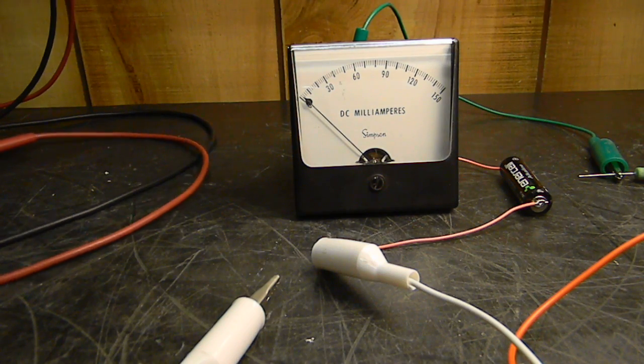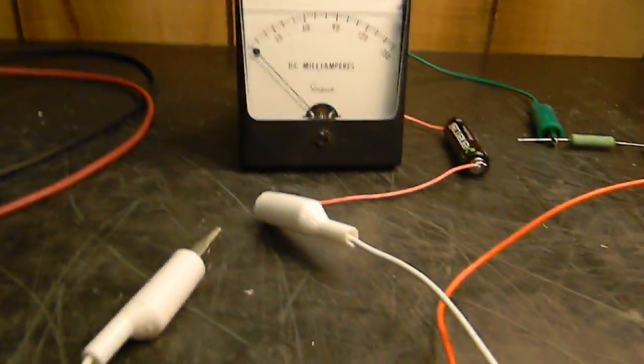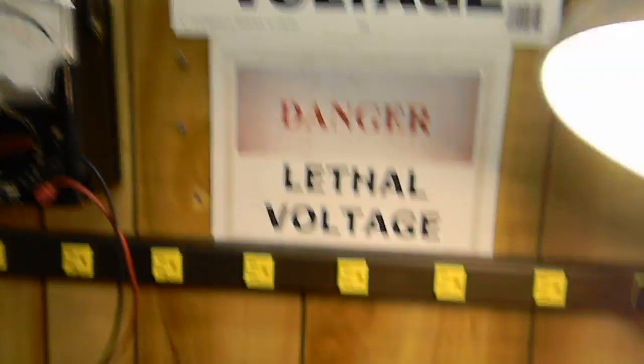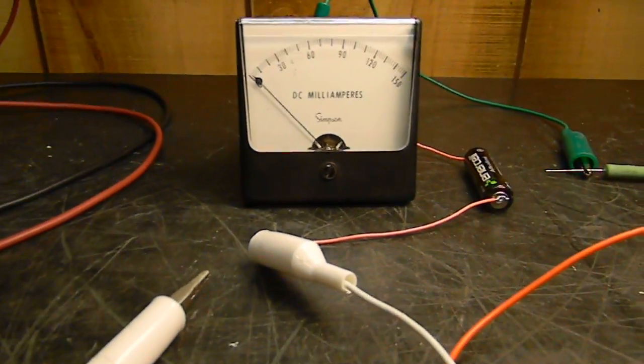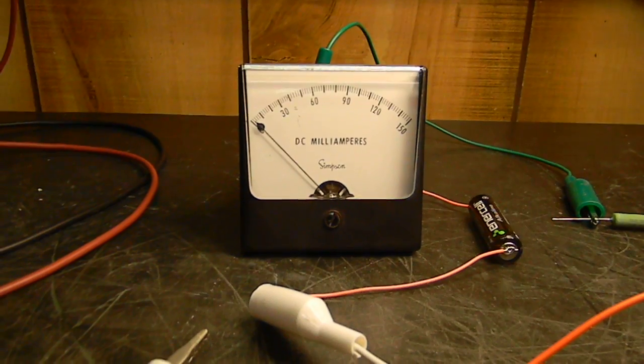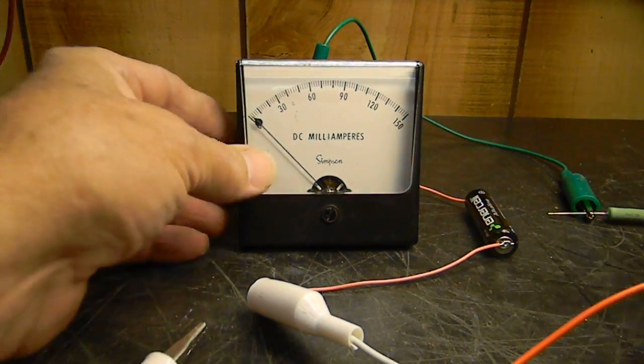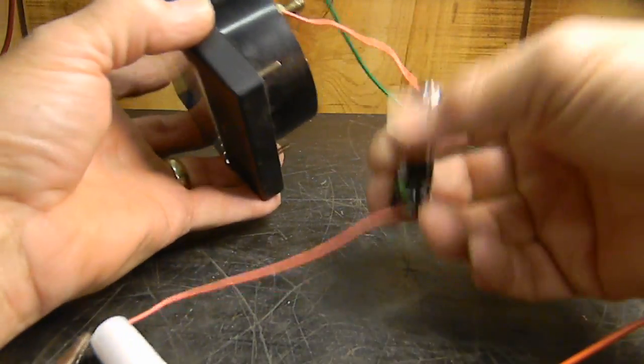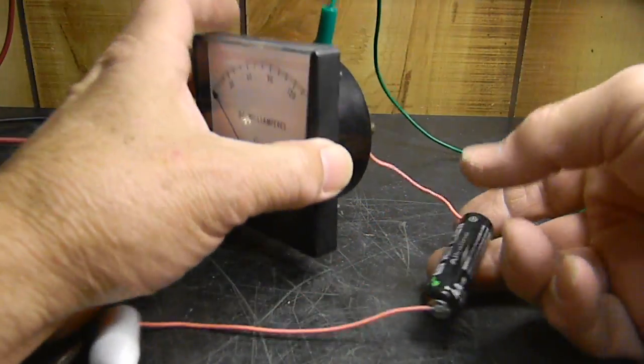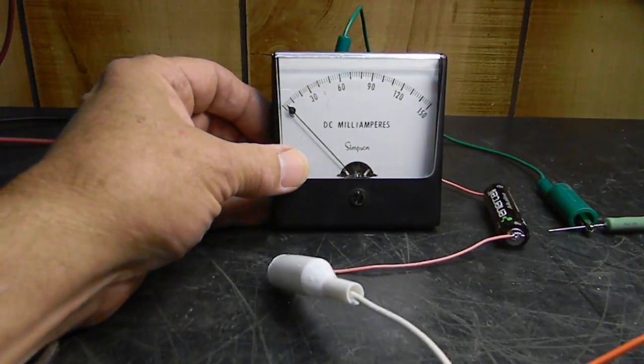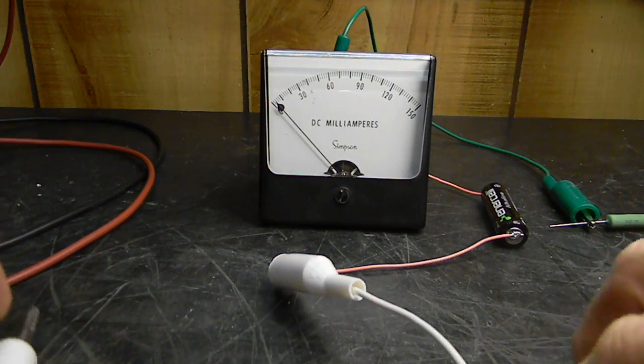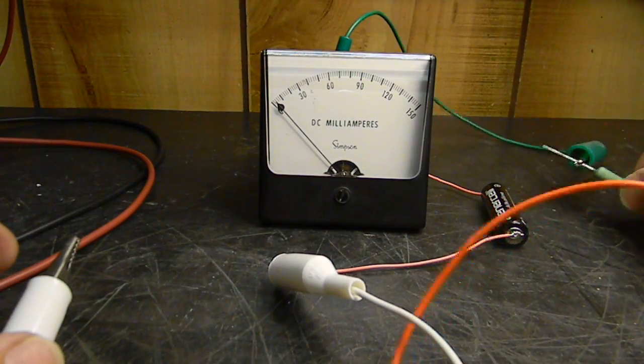What I've got set up here is something very simple. We're going to use a meter. I want to show you a setup that I made. I've just got a one and a half volt battery hooked in series with a 150 milliamp meter and a 10 ohm resistor to limit the current so we don't short circuit our battery.